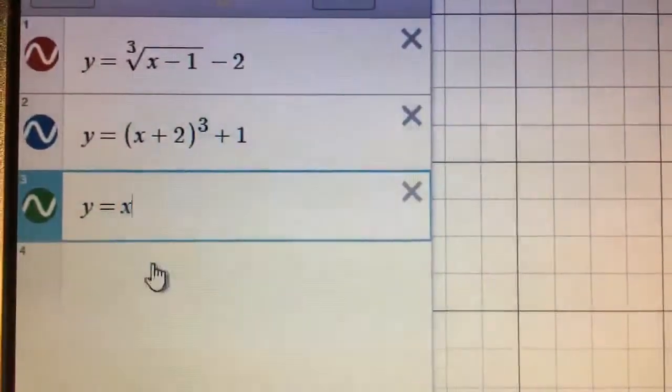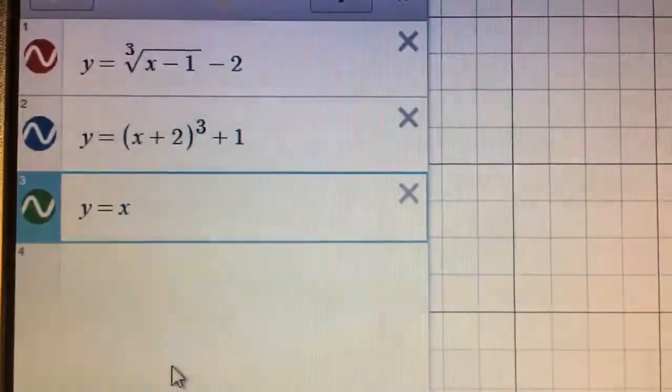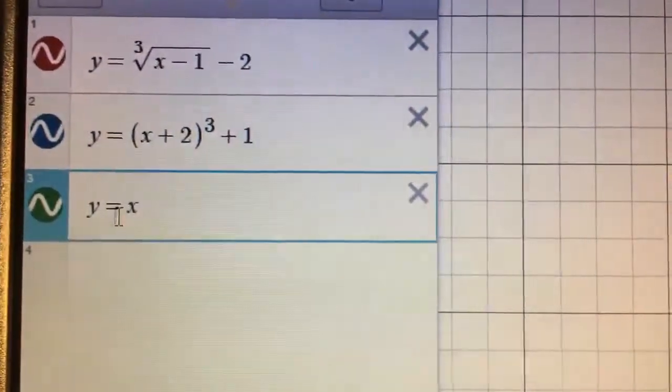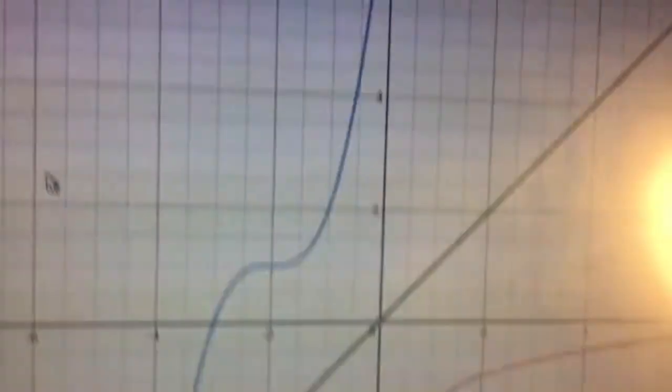And here is a line y equals x, because we know inverses are reflections of each other over the line y equals x. So, if you take a look at the graph,